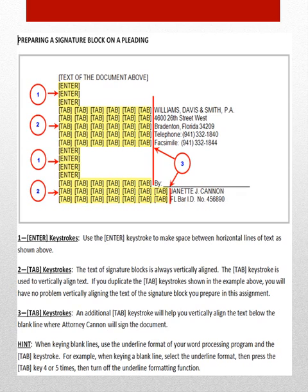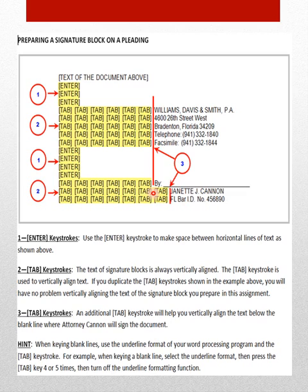A signature block is simply explaining to the court — and by rule of court, you must include the name of the person submitting the claim. In this case, we're working with an attorney, so Daffy Duck doesn't go in here — her attorney, Jeanette Cannon, is included. This is an illustration of a signature block. The text you see here is what will be seen to the reader. I'm suggesting you use enter keystrokes to make space between horizontal lines of text — making space between the wherefore clause and the beginning of the signature block.